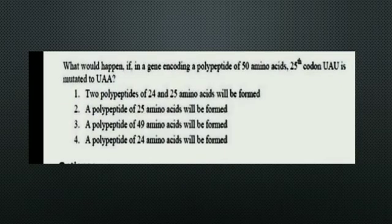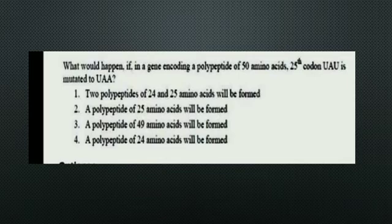The next question: What would happen if in a gene encoding a polypeptide of 50 amino acids, the 25th codon UAU is mutated to UAA? The right answer is Option 4: A polypeptide of only 24 amino acids will be formed.